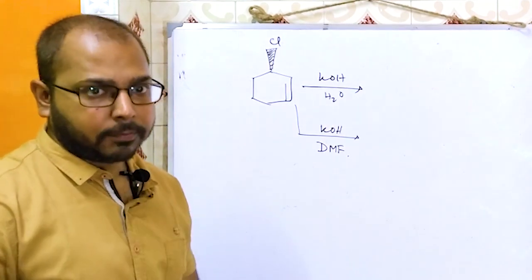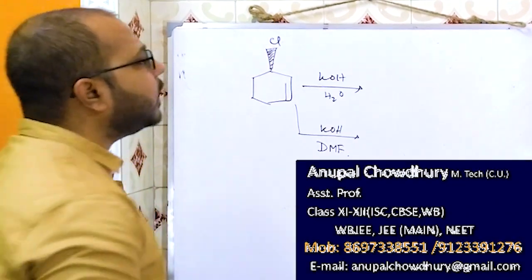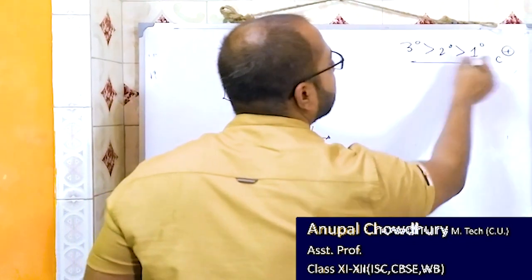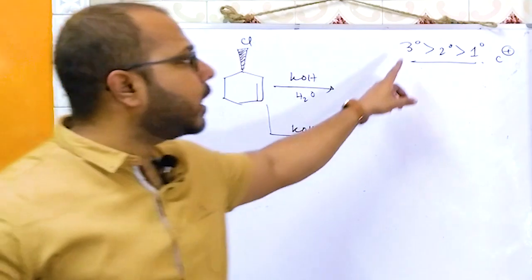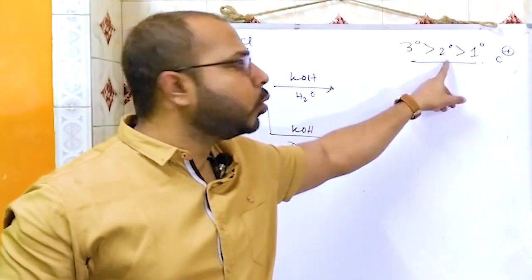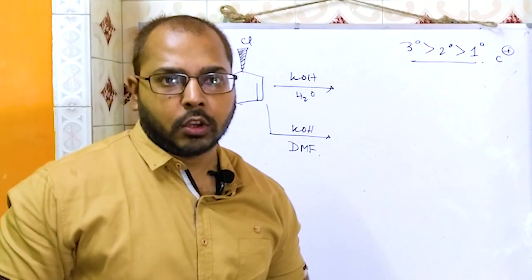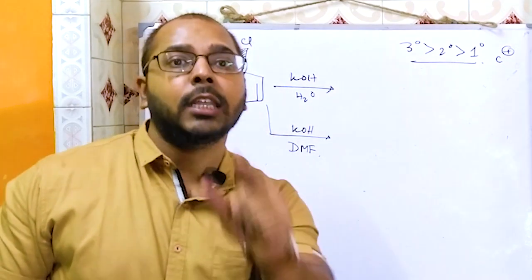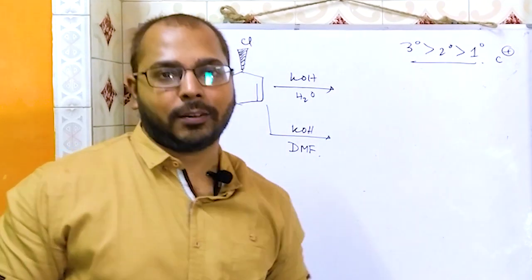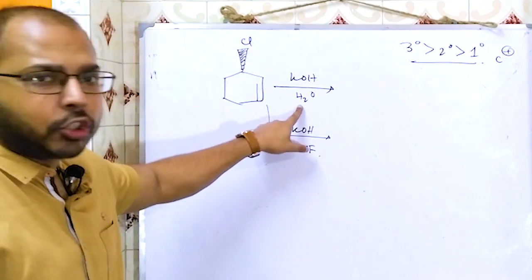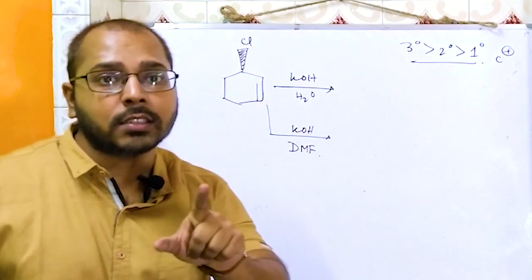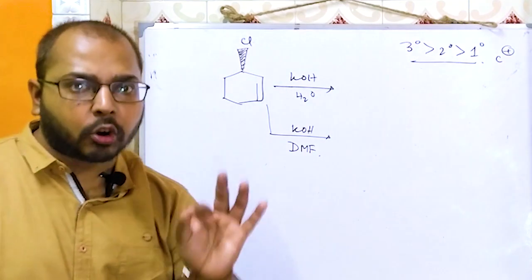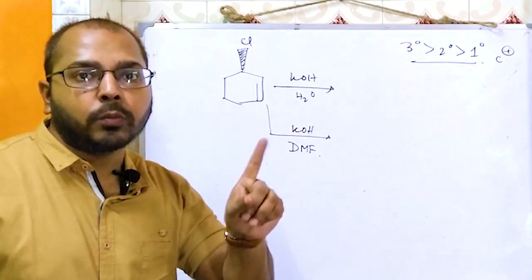A 2-degree carbocation may give SN1 or SN2 depending on the nucleophile and solvent. With H₂O as solvent — polar protic — formation of carbocation is favorable, so SN1 is expected. With a polar aprotic solvent like DMF, SN2 backside attack is favorable.